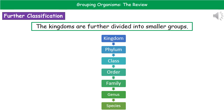Even when we split organisms up into kingdoms, there's still a massive range of organisms present within any given kingdom. So we further divide them into smaller groups. The sequence of divisions starts with the largest — the kingdom — which has the greatest number of organisms, then down to the phylum, the class, the order, family, genus, and finally the species at the bottom, where we're left with just one type of organism. You need to remember these different divisions, so it's suggested you come up with a mnemonic to help remember them in the correct sequence.